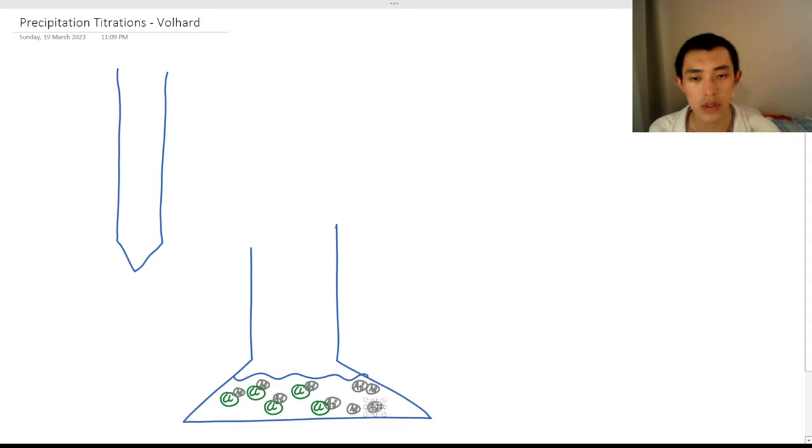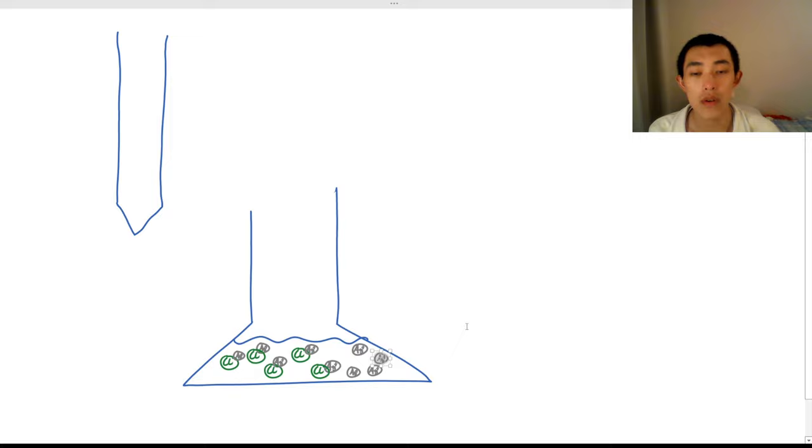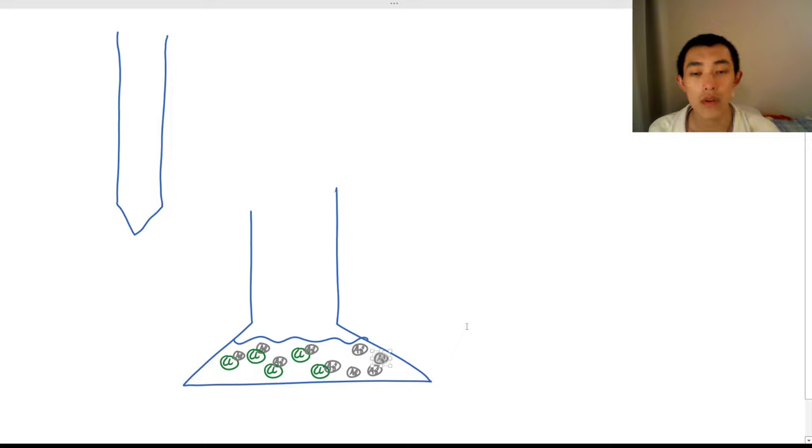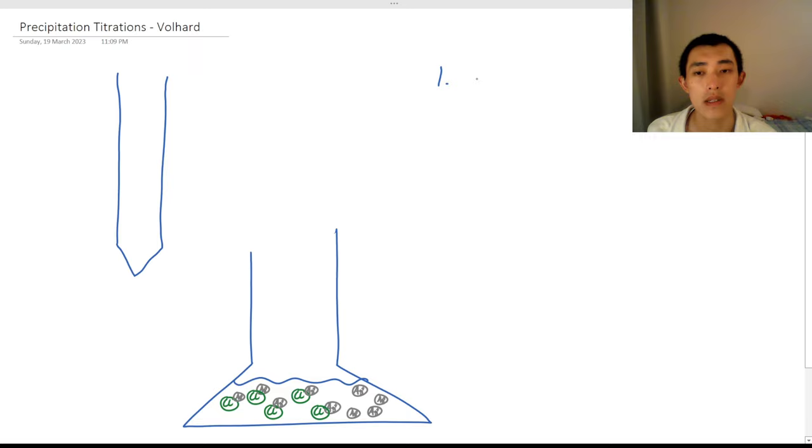We still added in these other 4 silver particles. So let's summarize what we've seen about the Volhard method so far. First of all, we put in excess amounts of silver nitrate, and that's going to cause the reaction. This is the same reaction as we saw with the Moore method.